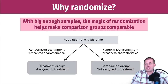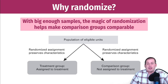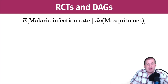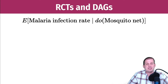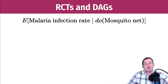As long as randomization is done well and on a big enough scale, you can have good comparable groups. The way this works in DAG language: let's imagine a randomized control trial where we want to see what the effect of having a mosquito net in your household is on the malaria infection rate in a village.